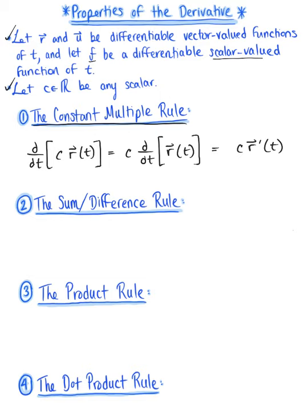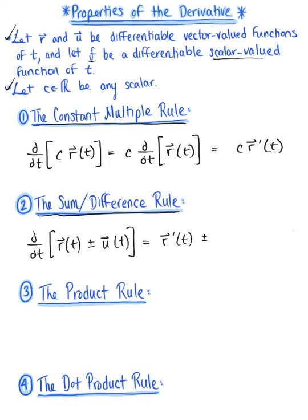Another familiar rule is the sum and difference rule. If we are differentiating the sum or difference of two vector-valued functions — vector r of t plus or minus vector u of t — we can differentiate each vector-valued function separately, leaving us with r prime of t plus or minus vector u prime of t.